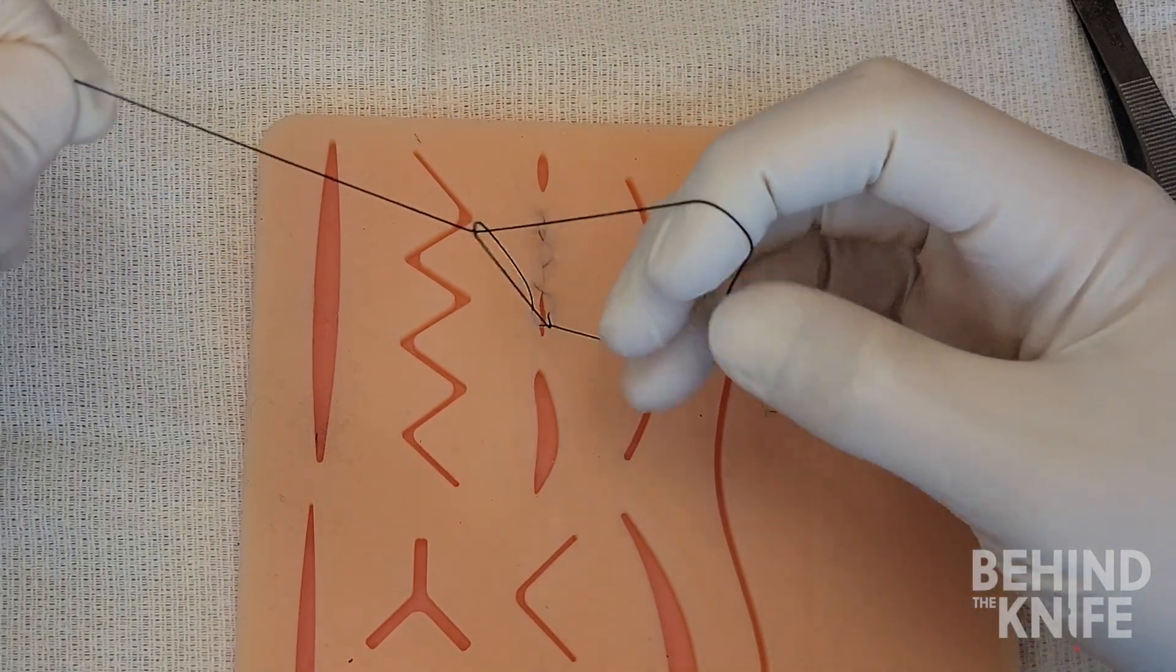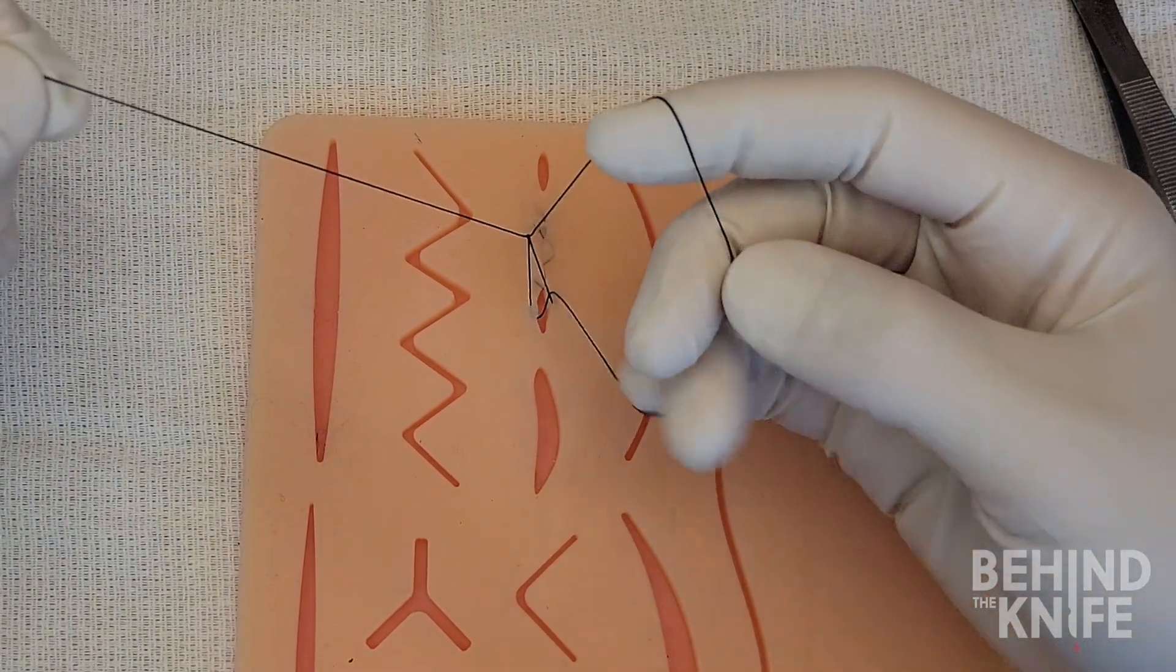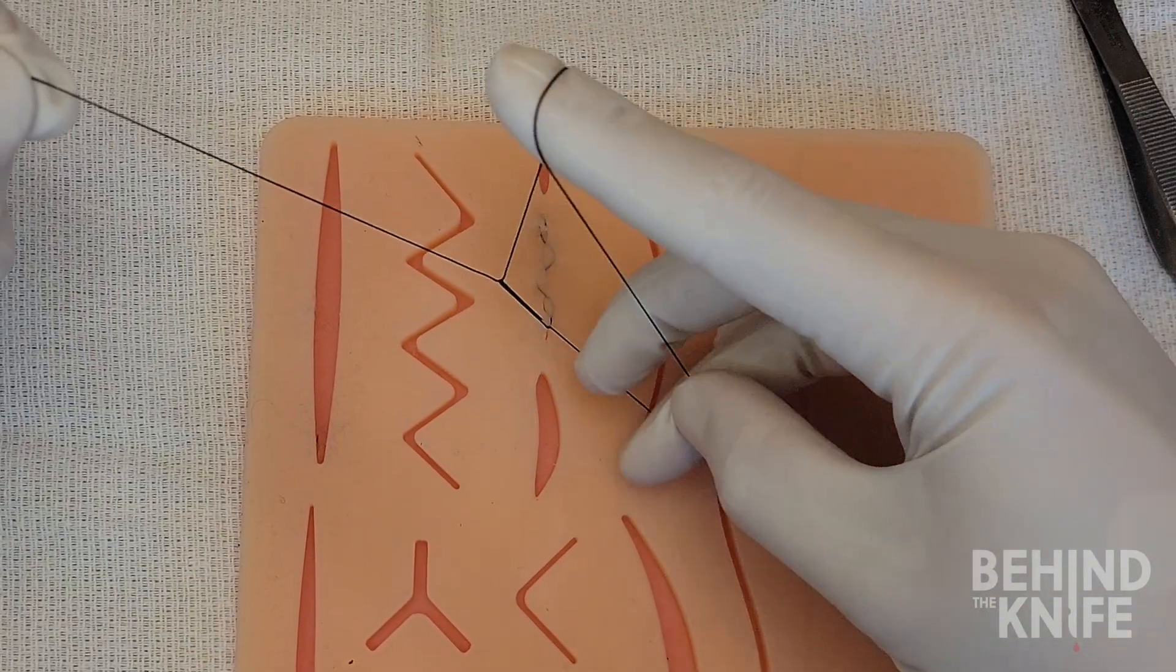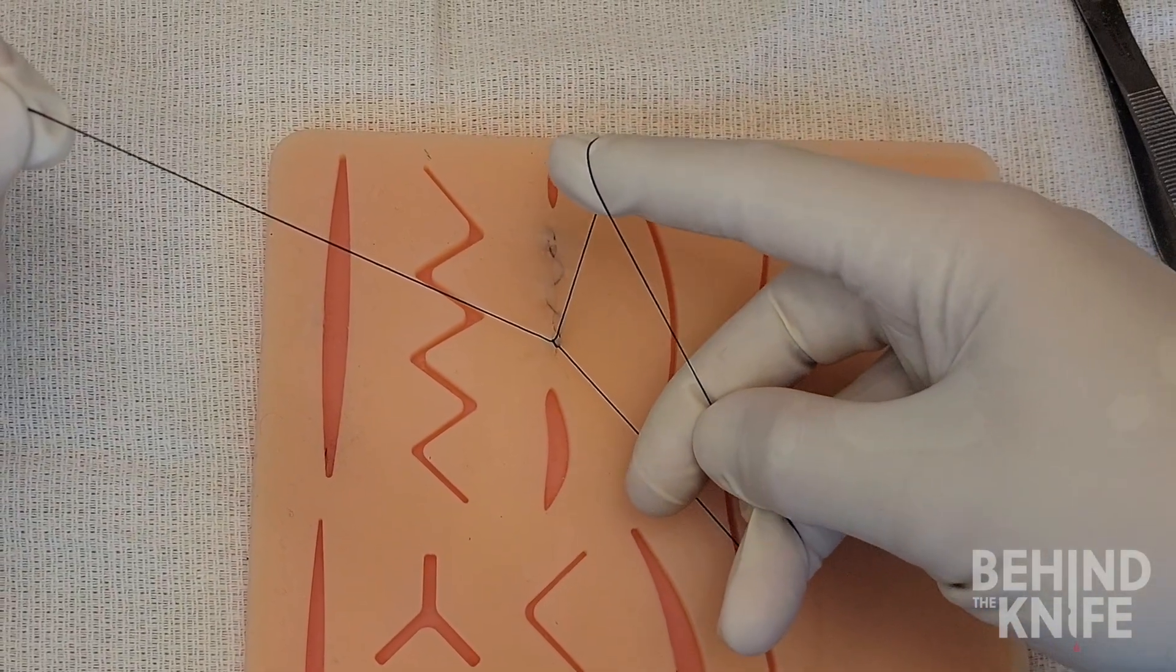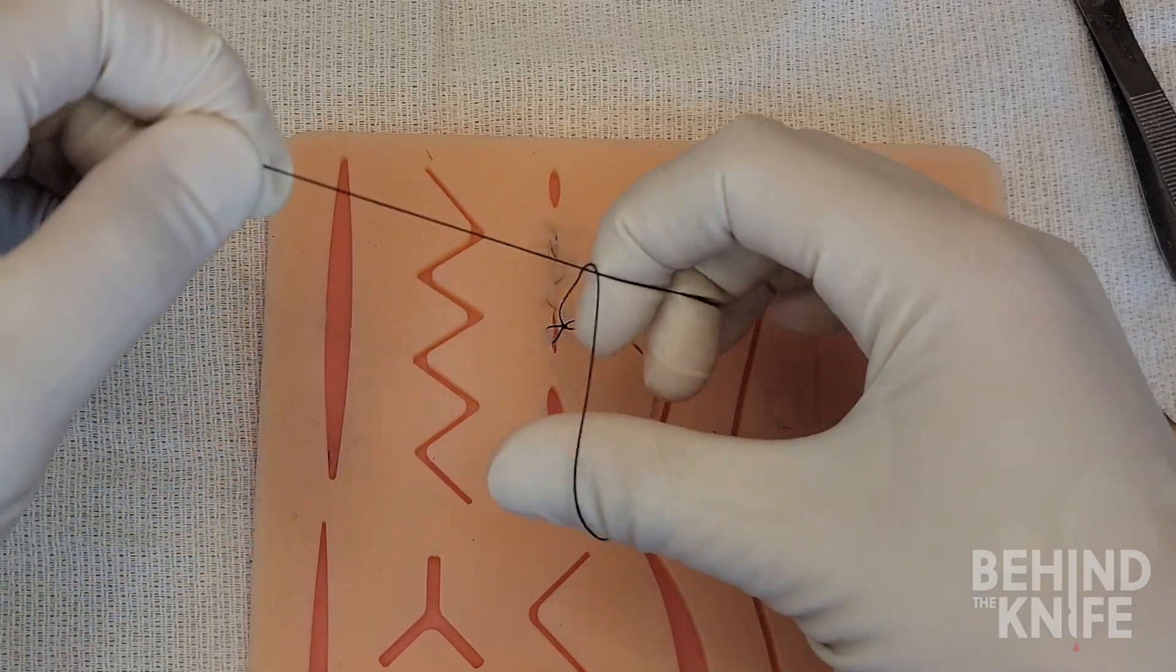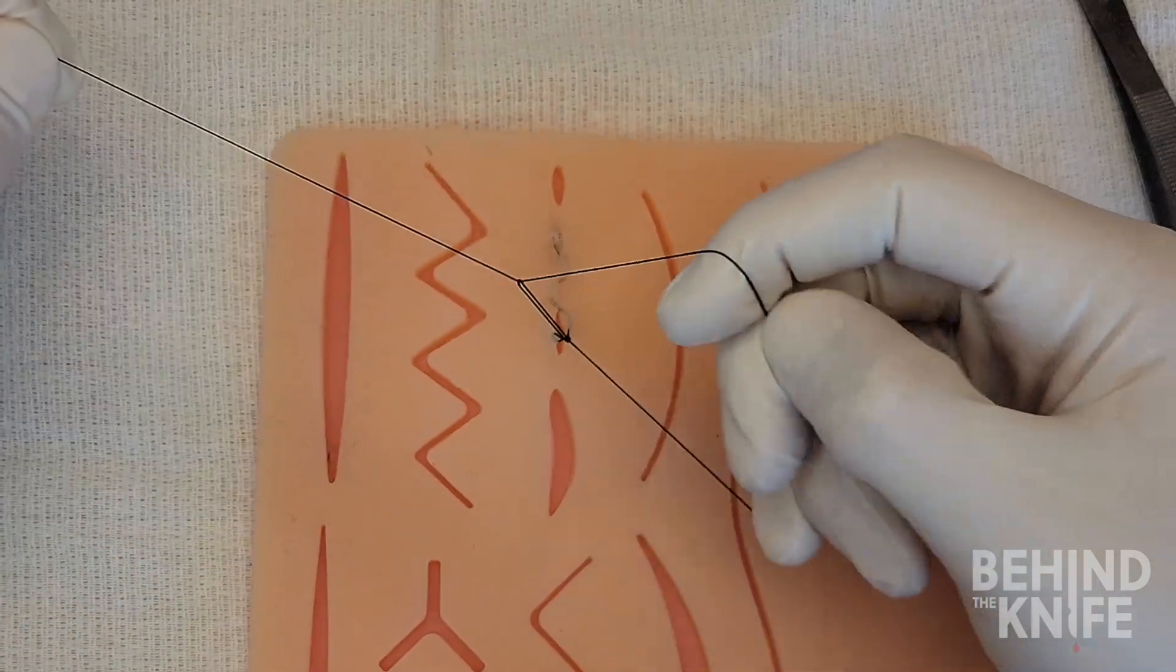To make sure a knot is tight without any slack, it is important to pull the suture in the loop with your right hand until the knot slides all the way down. From here, you can perform this same movement two more times.